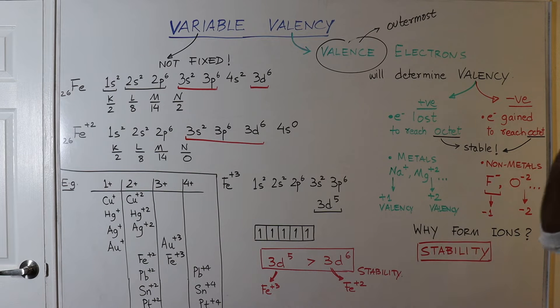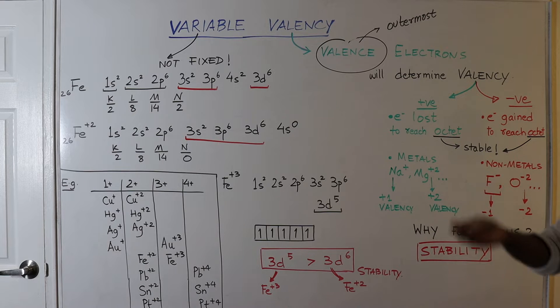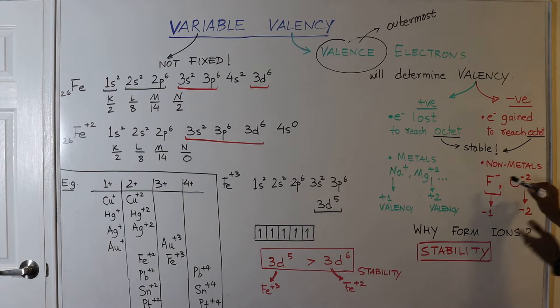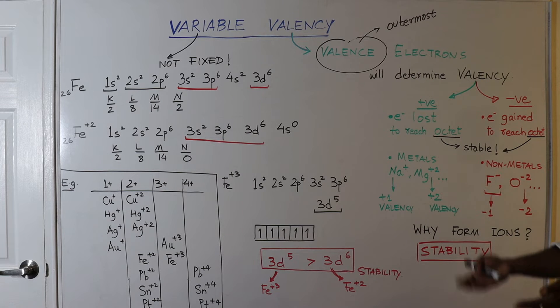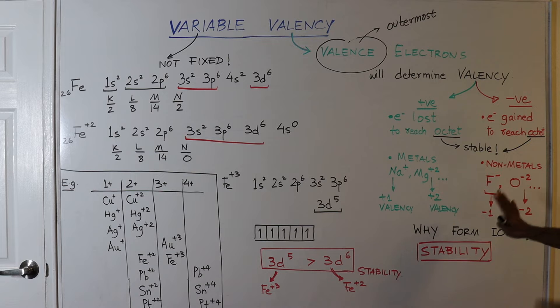Similarly for the nonmetals, if we see fluorine, fluorine has gained an electron to become F- to gain a stable octet. And the minus one is the valency of that atom. Similarly for chlorine is also minus one. Now oxygen accepts two electrons to become a stable octet, therefore minus two. And this minus two is the valency of oxygen atom.